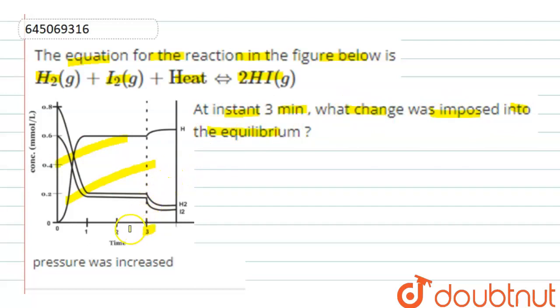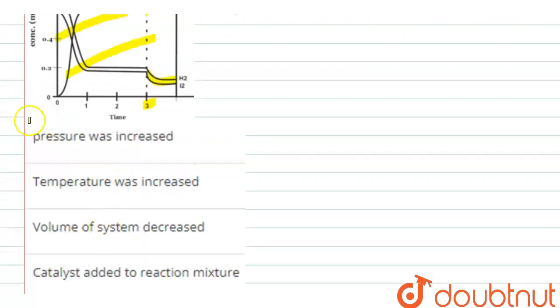At instant 3 minutes, there is a decrease in the concentration of hydrogen and iodine and an increase in the concentration of HI. The question is what change actually imposed on the equilibrium so that this had happened. The change is whether increase in pressure, increase in temperature, decrease in volume, or addition of a catalyst to the reaction mixture.